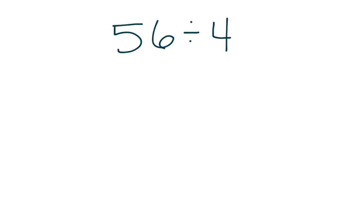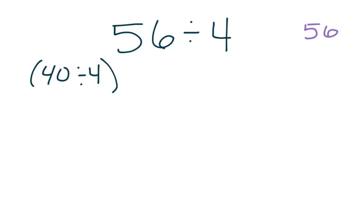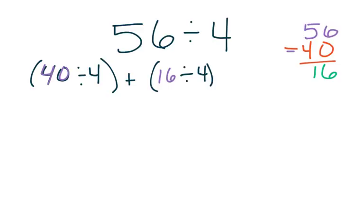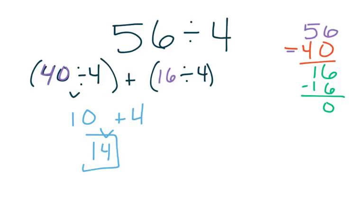Here we have 56 divided by 4. I need to think about 4 facts that I know that I can divide into evenly. I'm going to put my 56 off to the side, and I know that 4 goes into 40 evenly, so I would start with 40 divided by 4. Now I'm going to take this 40 and subtract it from my whole, and that gives me 16 left to work with. I know a problem that gets me 16 when thinking about my 4s, so here I'm going to have 16 divided by 4. Then I subtract that from my whole. 40 divided by 4 gives me 10, plus 16 divided by 4 gives me 4, and I get my quotient of 14.